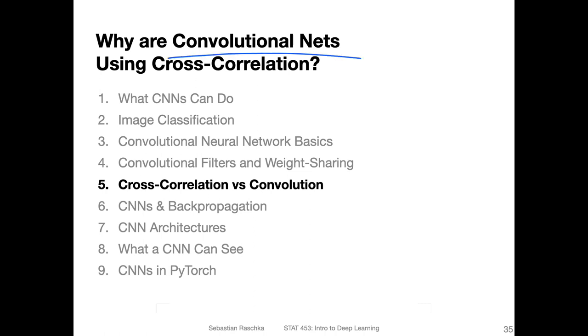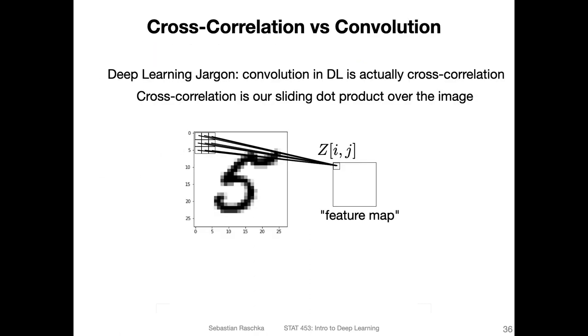In fact, convolutional networks are actually performing something called cross-correlation. So what's the difference between convolution and cross-correlation? Cross-correlation or convolution is another one of these jargon terms.